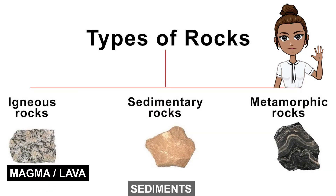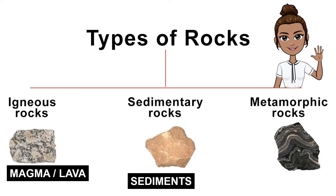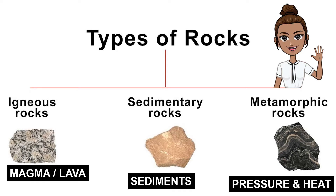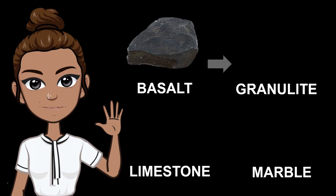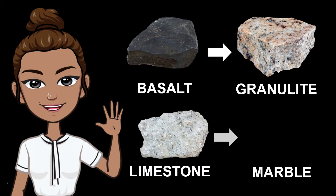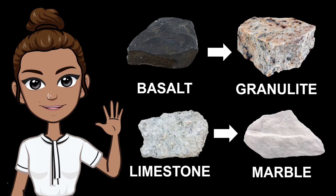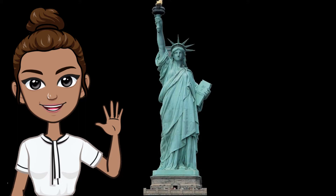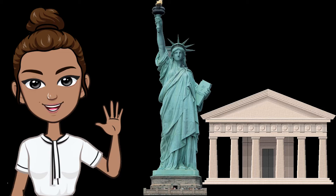Other rocks change from one form to another and are called metamorphic rocks. Metamorphic means to change. These rocks are often formed in mountains. The pressure and heat change these rocks. For example, basalt can be changed by pressure and heat to turn into granulite. Limestone can be changed into marble. Have you seen the Statue of Liberty? That is made of marble. Buildings can also be made of marble, like the Greek temples.